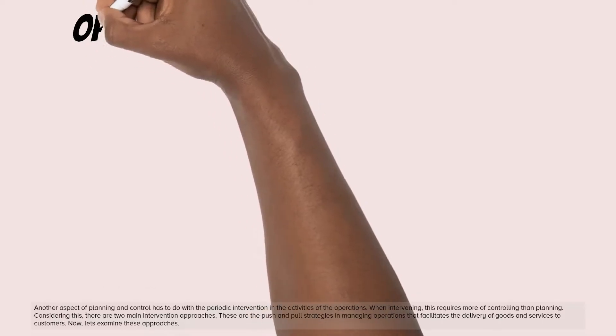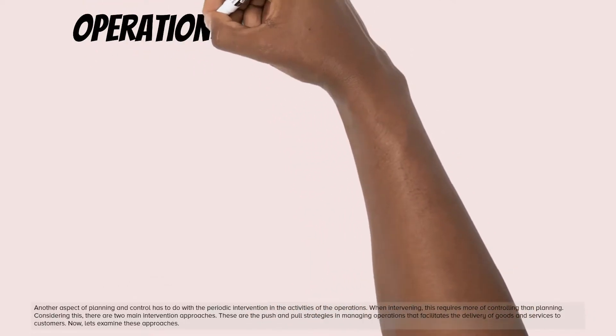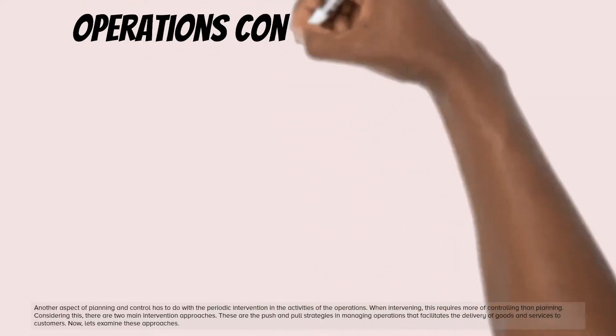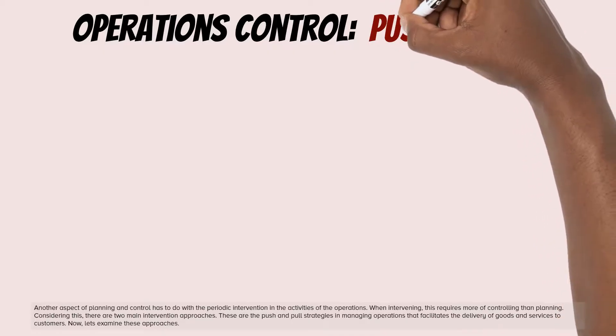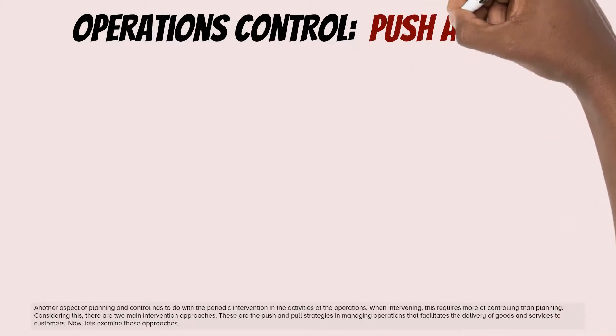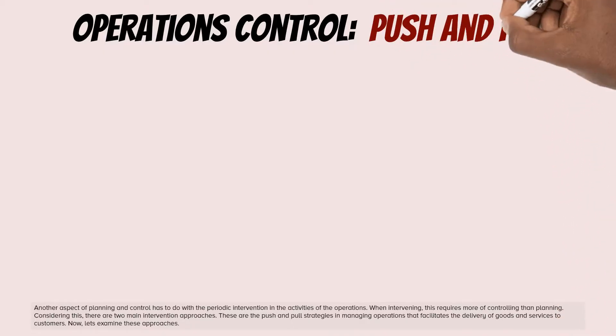Another aspect of planning and control has to do with the periodic intervention in the activities of the operations. When intervening, this requires more of controlling than planning. There are two main intervention approaches: the push and pull strategies in managing operations that facilitate the delivery of goods and services to customers. Let's examine these approaches.